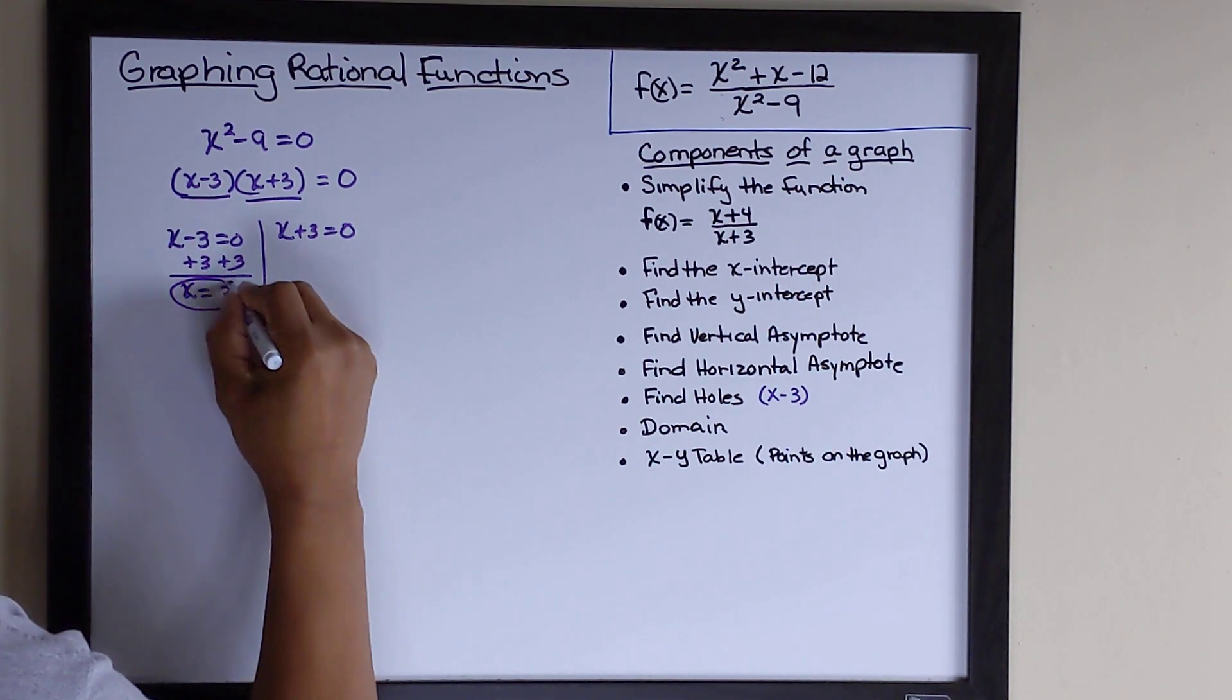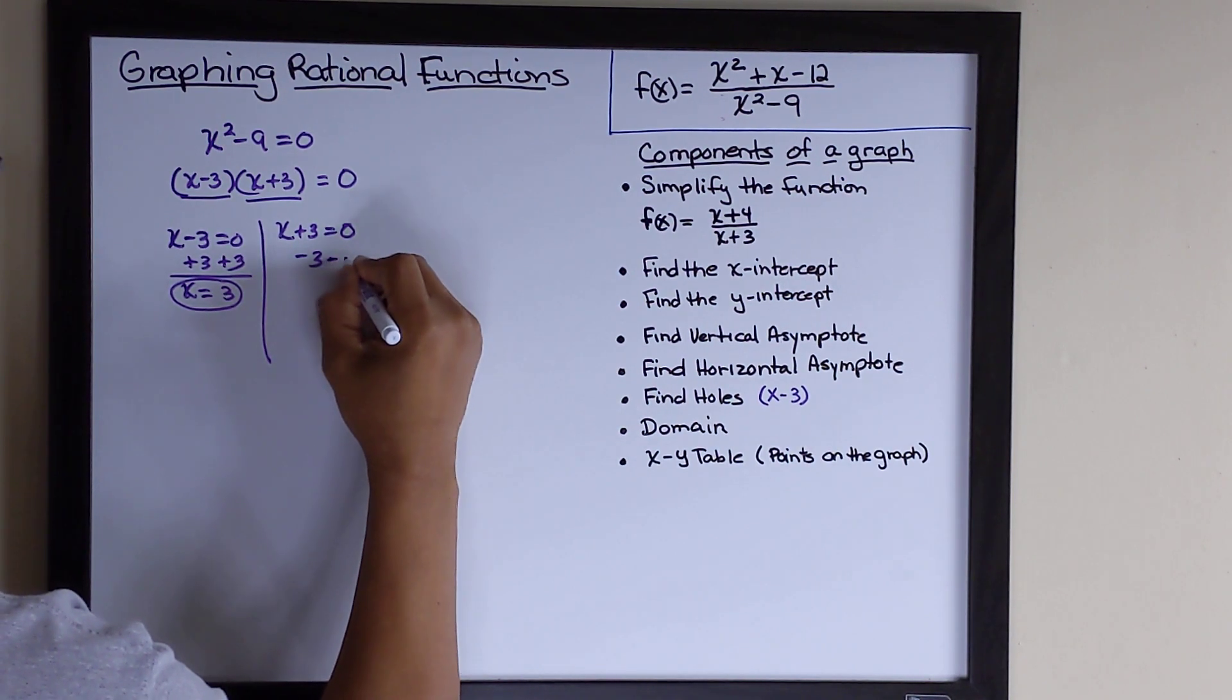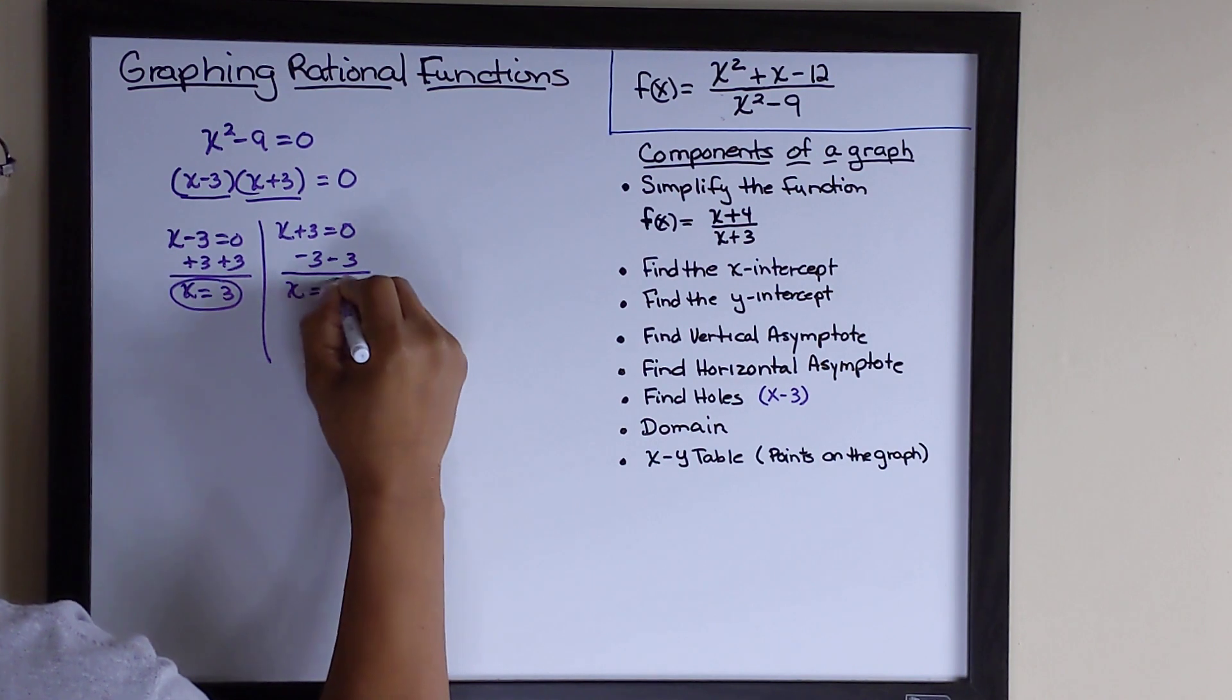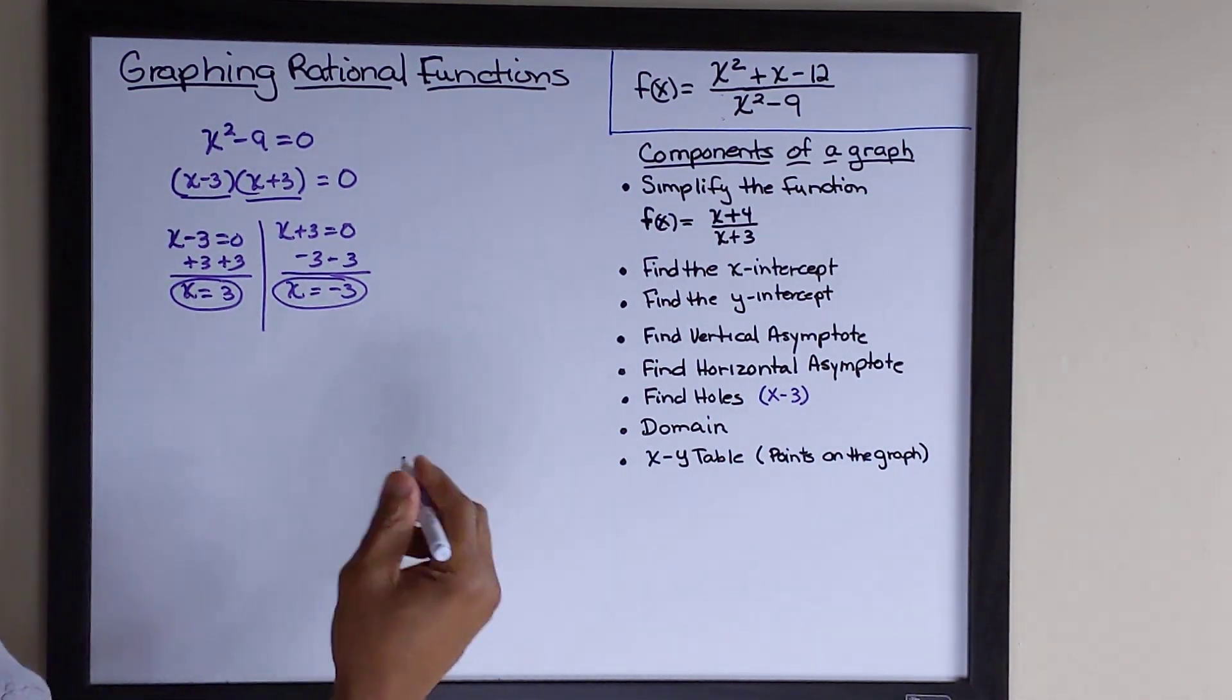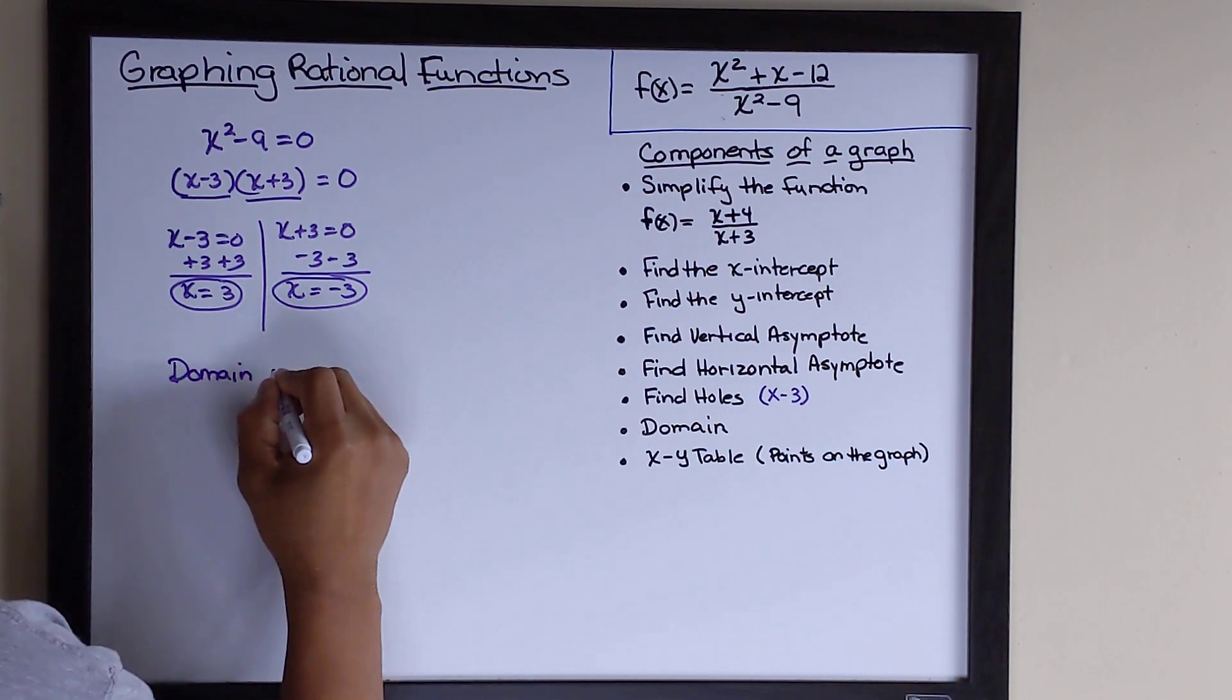So plus 3 plus 3, x equals 3 here, and then minus 3 minus 3, x equals negative 3 here. So the numbers that we can't use are going to be 3 and negative 3.